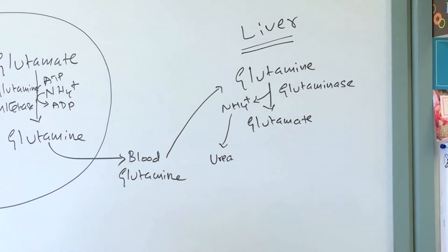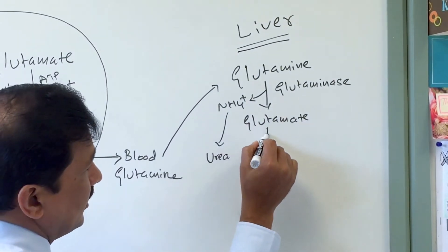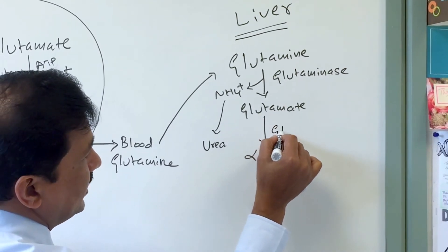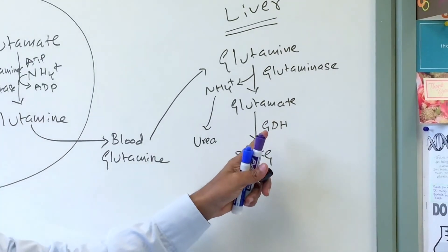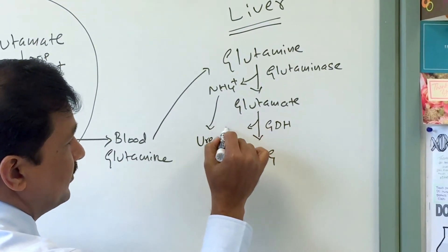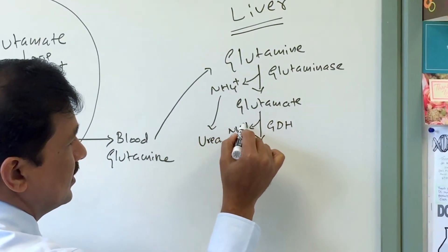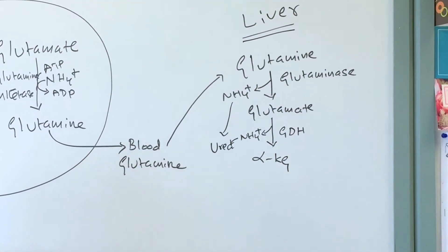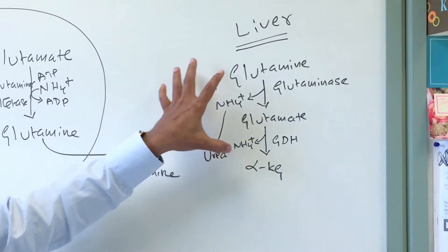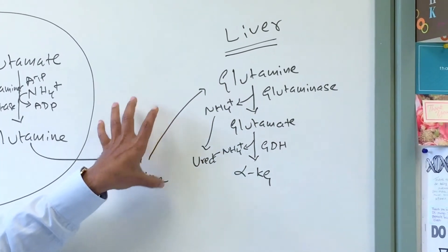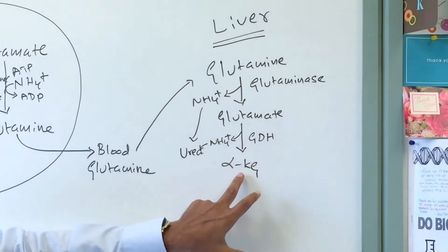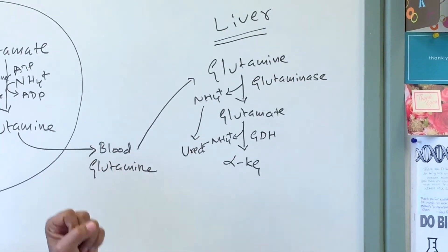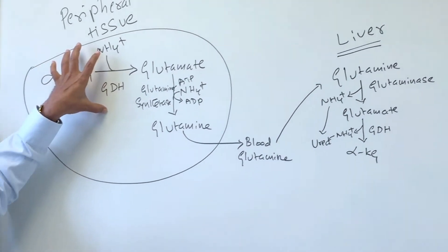The glutamate produced in the liver is further converted into alpha-ketoglutarate by glutamate dehydrogenase — also a mitochondrial enzyme — releasing one more ammonium ion (NH4+). That ammonium ion also enters the urea cycle. So in the liver, glutamine → glutamate → alpha-ketoglutarate, with ammonium ions feeding urea formation.